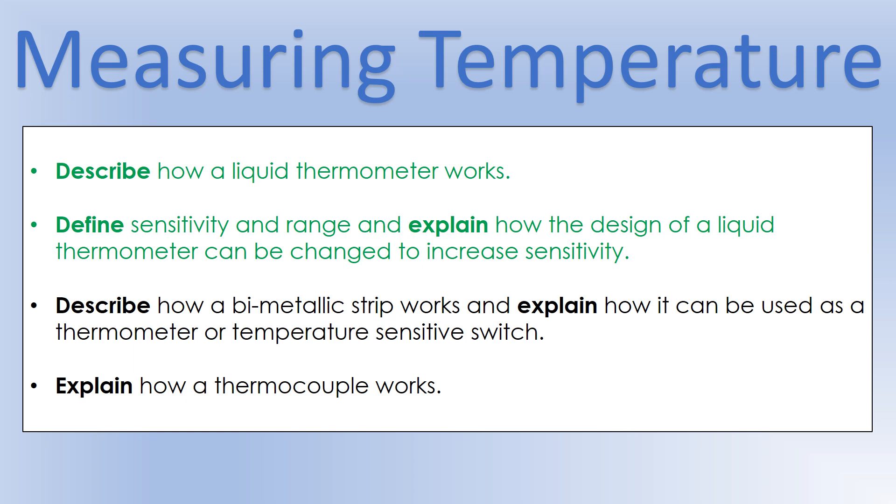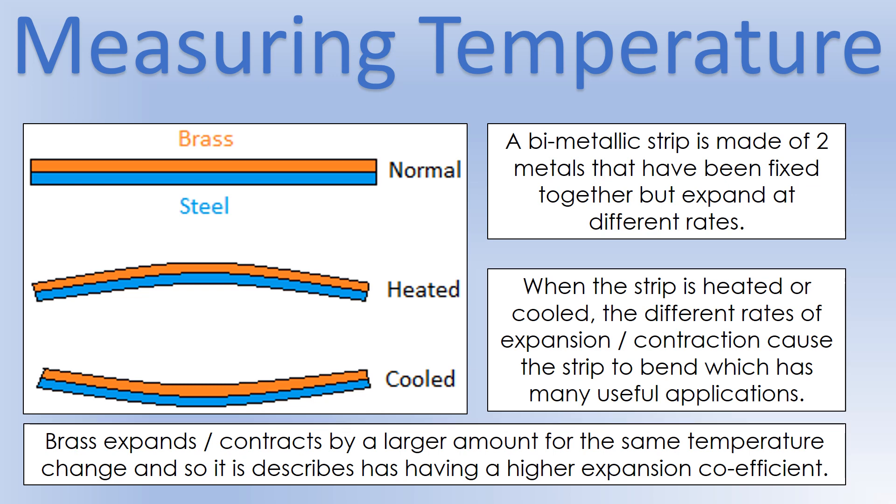Next, we're going to look at two other designs for thermometers that can also be used. So one of the ways we can use this is it's called a bimetallic strip, which is kind of what it sounds like. It's just two metals that have been fixed together, but there's two different metals, so they respond differently to temperature. And in fact, they expand at different rates as they are heated. So it's the difference in expansion that causes them to bend. So they're fixed together, so they can't just expand over the top. And that's what makes them bend in each of these directions. So in the diagram that you can see, brass expands or contracts by a larger amount for the same temperature change. And so we sometimes describe that as being a higher expansion coefficient. So we're going to look at two different ways we can make use of this principle.